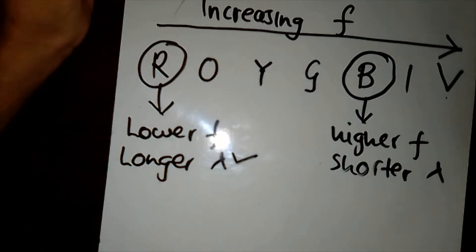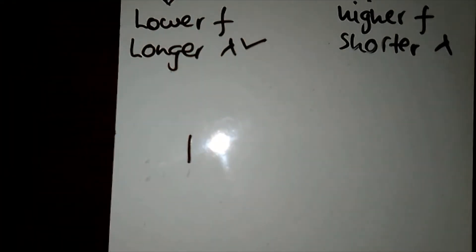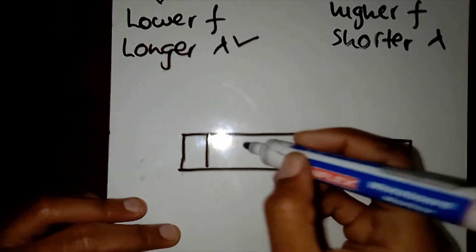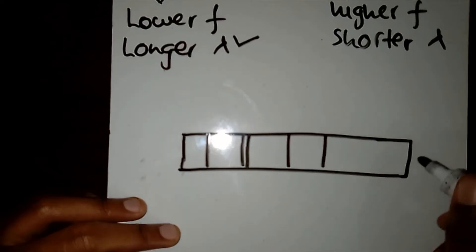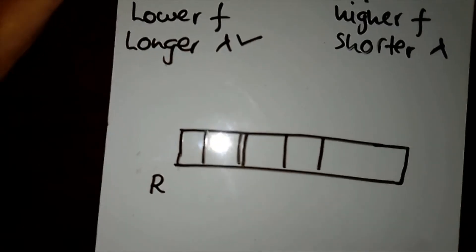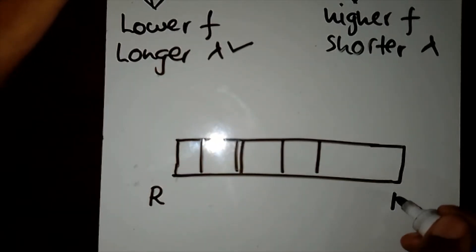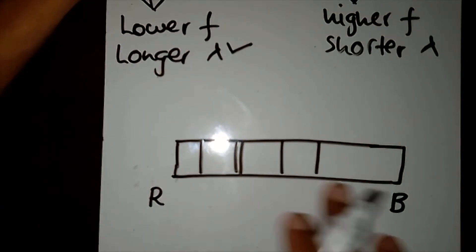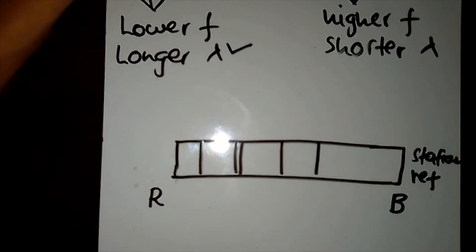This shift can be observed if you compare two absorption spectra of moving stars with a reference spectra. Let's say we have an absorption spectrum, and it looks something like this. On this side we have the red end of the spectrum, and on the other side, towards the blue end of the spectrum. This is our stationary reference that is not moving.